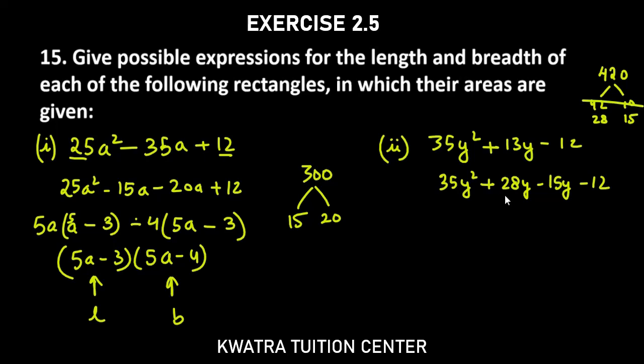From the first two terms you can take 7y common. You get 5y + 4. From the last two terms you can take 3. Just a second, here it is 5y + 4. And here what will come? 5y + 4. So our two factors will come: 7y - 3 and 5y + 4.